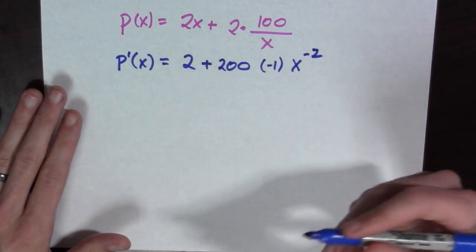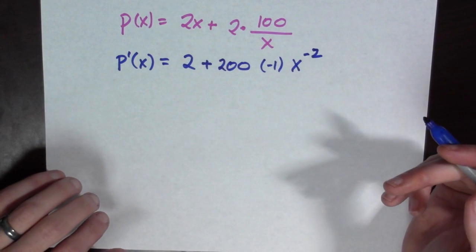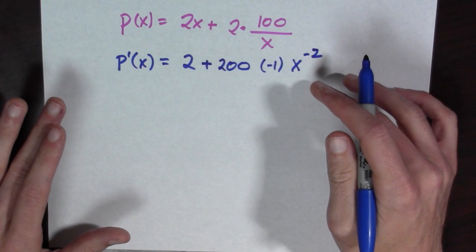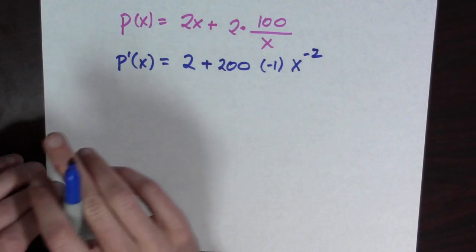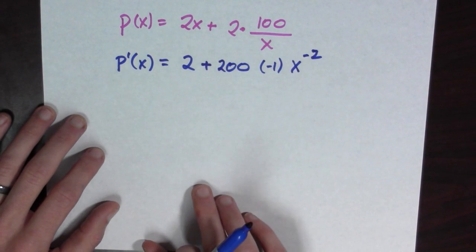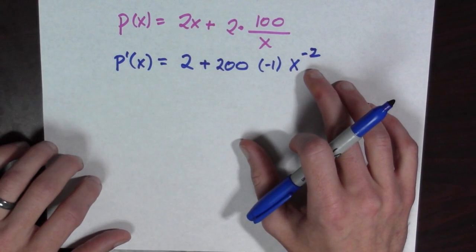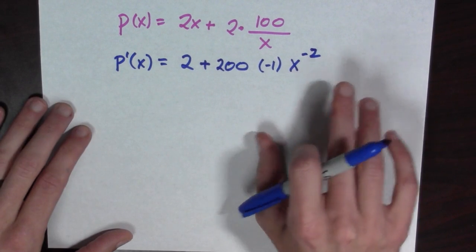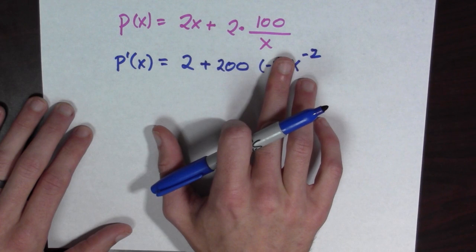Aha. Now, if you remember, the local maxes and mins are, well, they're not going to be when x is equal to 0. I mean, we could check that. I mean, x has to be greater than 0. But the local maxes and mins are at the critical points. And so the critical points is when the derivative is 0 or undefined. So the derivative is undefined at 0. But the perimeter when x is equal to 0 is also undefined.